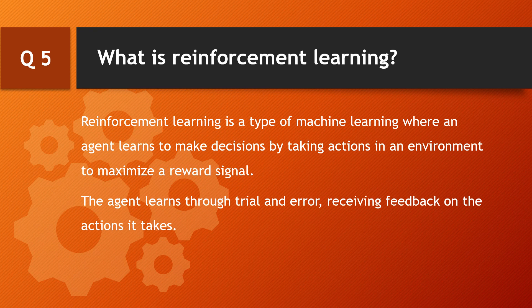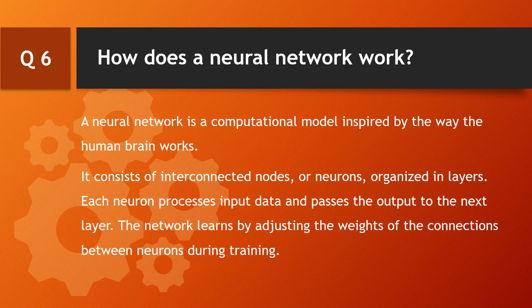Question: what is reinforcement learning? Reinforcement learning is a type of machine learning where an agent learns to make decisions by taking actions in an environment to maximize a reward signal. The agent learns through trial and error, receiving feedback on the actions it takes.